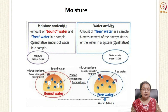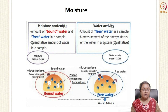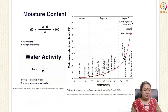Water activity concentrates on the amount of free water and is the measurement of the energy status of water in a system, making it a qualitative value. Both moisture content and water activity are important for understanding microbial growth, shelf life, and how they influence product quality. Moisture content is the difference in weight before and after drying upon the initial weight, expressed as a percentage, whereas water activity is the ratio of the vapour pressure of food to the vapour pressure of pure water.